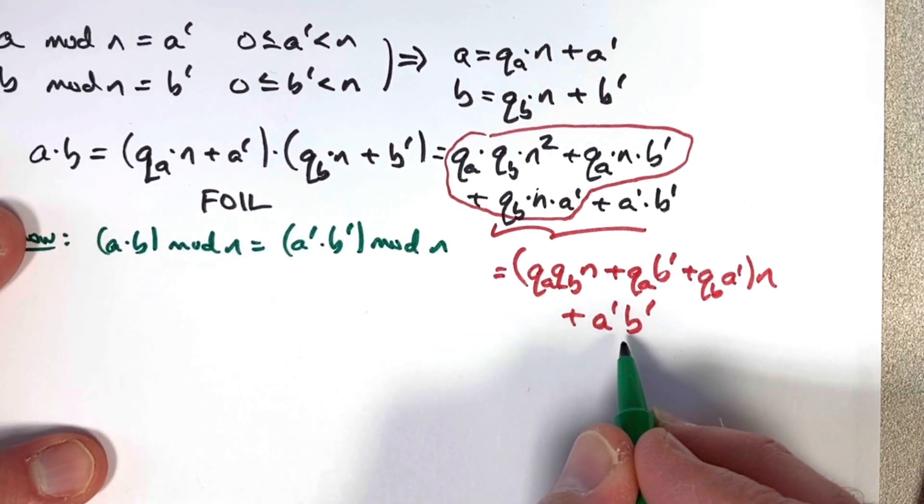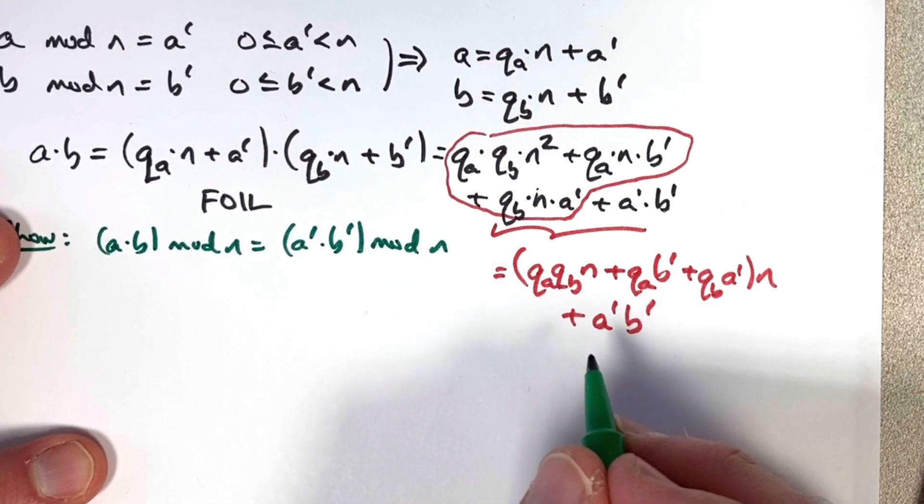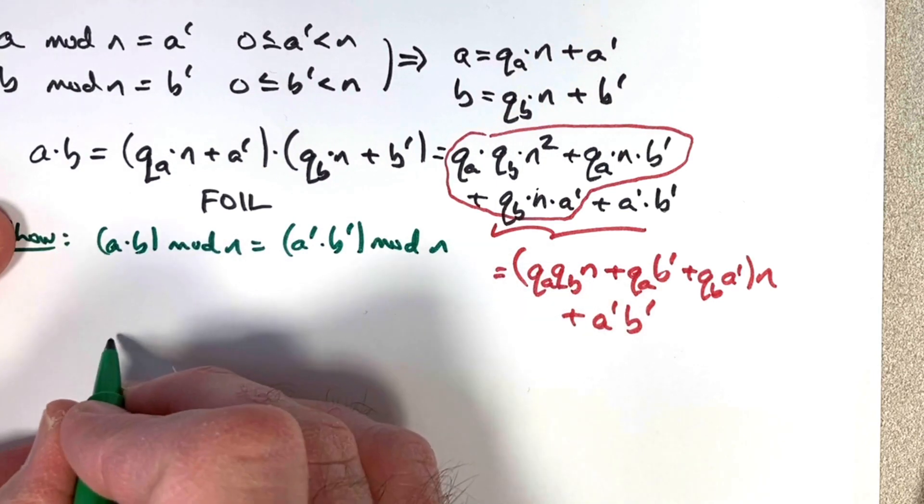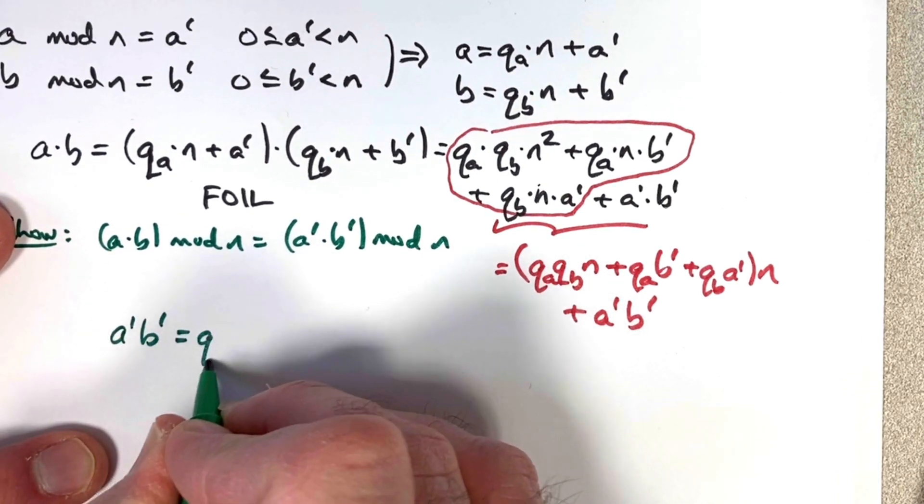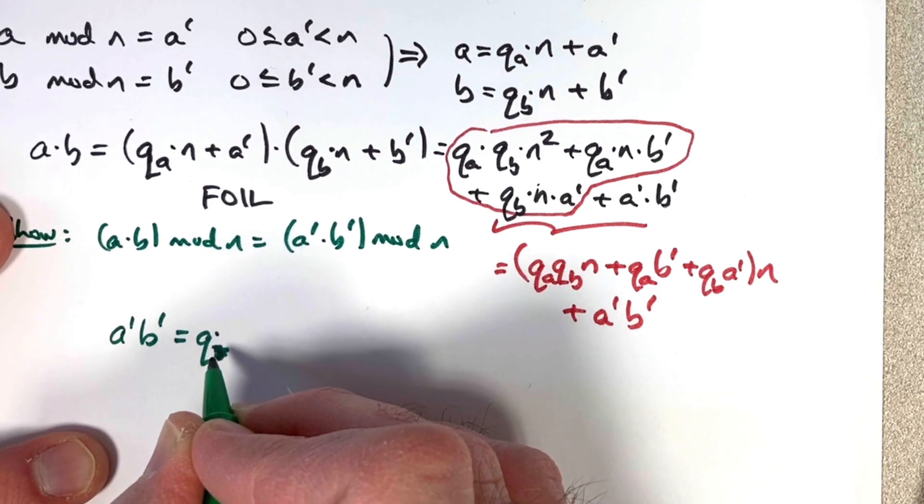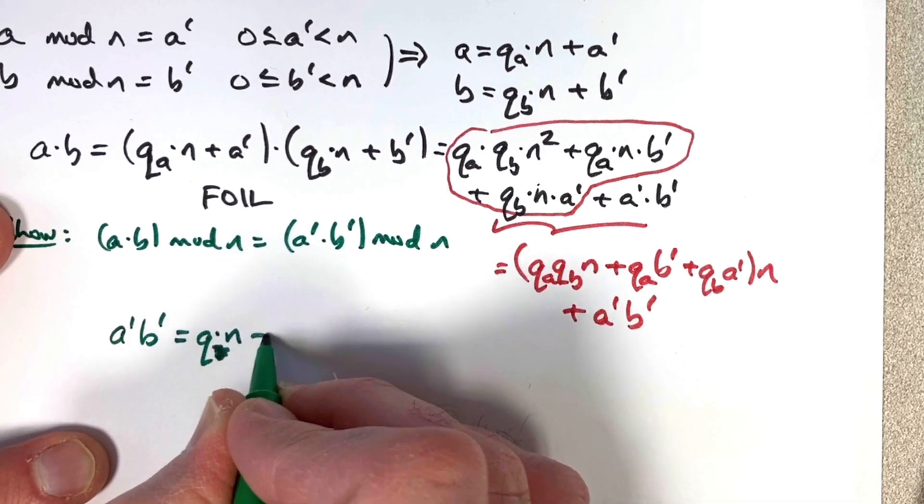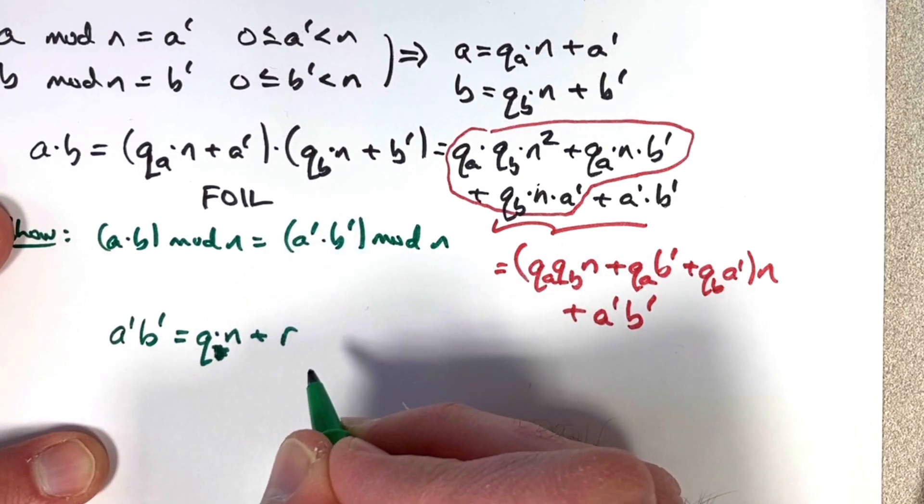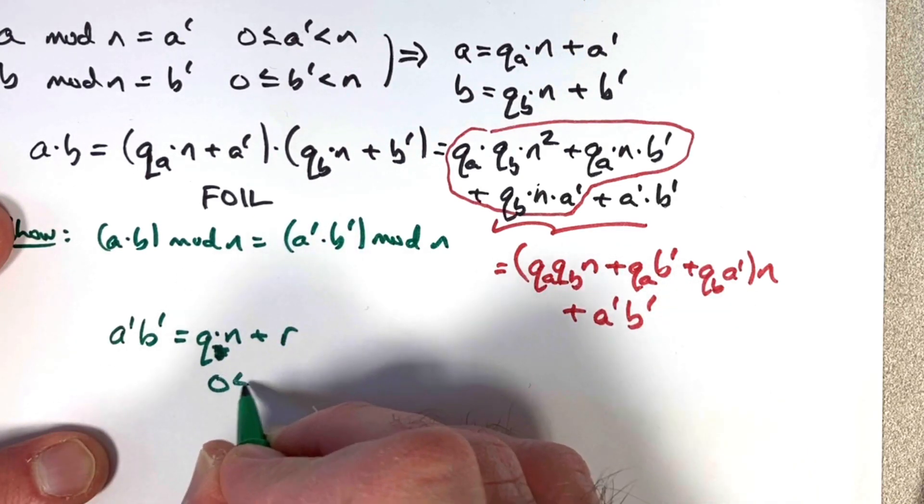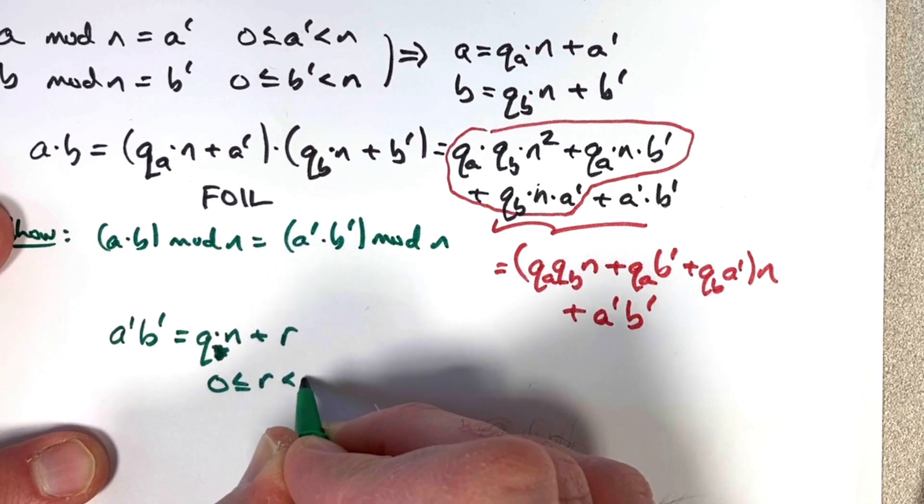How can we be more careful? We need to realize that this thing could be bigger than n, but I could still divide this by n and get a remainder. I could write a prime times b prime equals some other quotient, call it q, times n plus some remainder. Just call it r for remainder. This remainder would be guaranteed to be between 0 and n by definition. It could be 0, but not n.